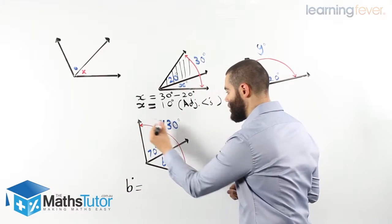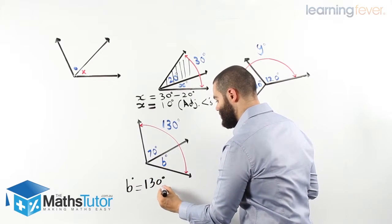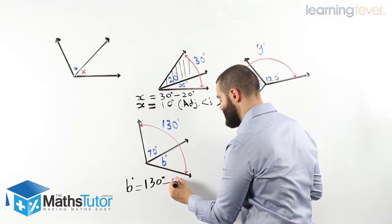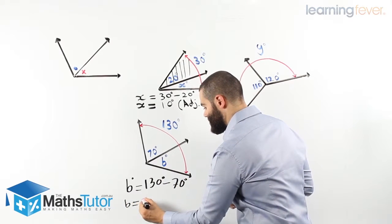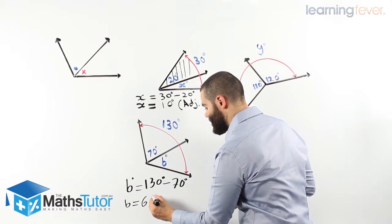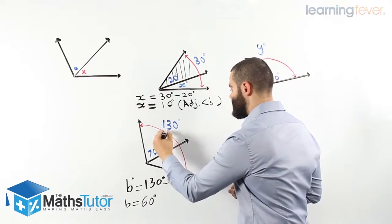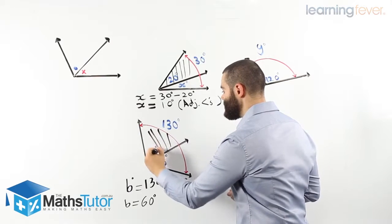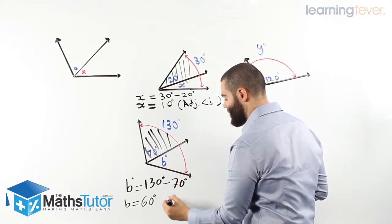B equals to the total 130, take away the 70. That means B is going to be 60, 60 degrees. So the total is 130. We're taking away the 70. We're going to be left with 60 degrees.